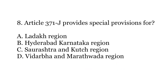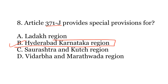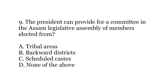Eighth question: Article 371J provides special provisions for which region? Options: A) Ladakh region, B) Hyderabad-Karnataka region, C) Saurashtra and Kutch region, or D) Vidarbha and Marathwada region. The answer is B) Hyderabad-Karnataka region. Since this was a backward region, the 98th Amendment added Article 371J to the Constitution, providing special provisions to the President and Governor to deliver development initiatives for this particular region.